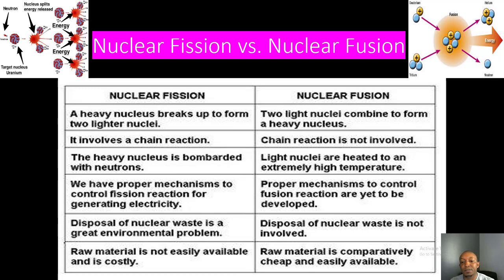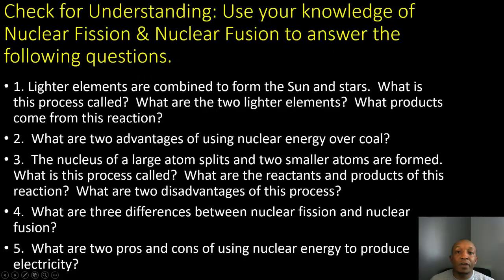In nuclear fusion, the proper mechanisms to control the fusion reaction are yet to be developed — we lack the technology to recreate those reactions because they require extremely high temperatures. Disposal of nuclear waste is a great environmental problem in fission, but in fusion disposal of nuclear waste is not involved, making it a much cleaner energy source. Finally, nuclear fission raw material is not easily available and is costly, but in nuclear fusion the raw material is comparatively cheap and easily available — we just currently lack the technology to recreate the process.